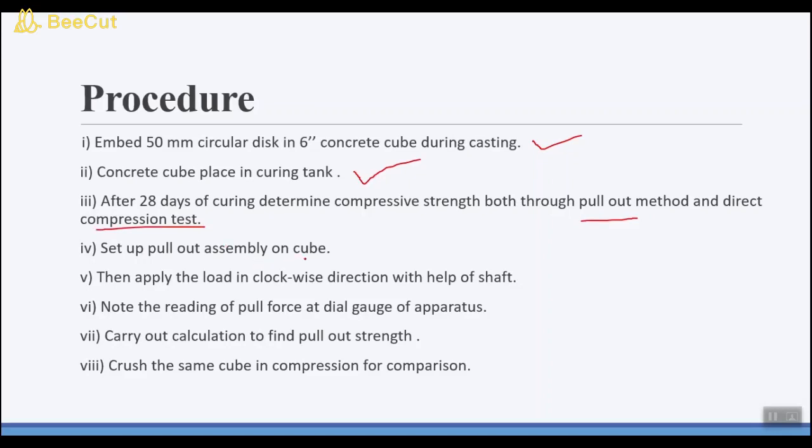After 28 days, first you have to air dry, then set up the pullout assembly on the cube, then apply the load with the help of shaft in clockwise direction. At the failure, note the reading of dial gauge of the apparatus. That dial gauge will give you the pullout force. After that you have to determine the pullout strength by dividing the pullout force with the area of circular disc, then the same cube is crushed in compression for comparison purpose.